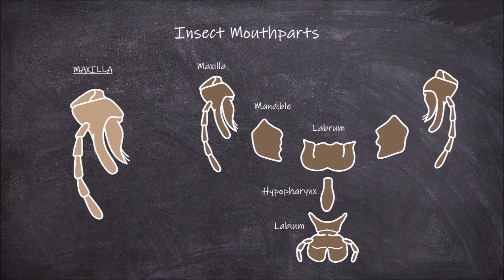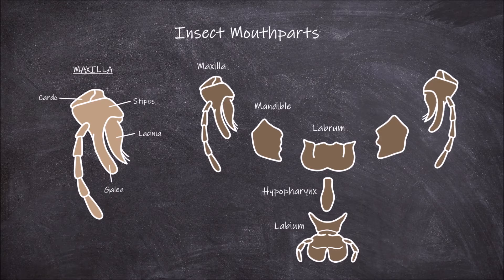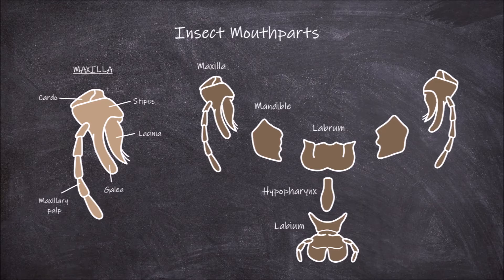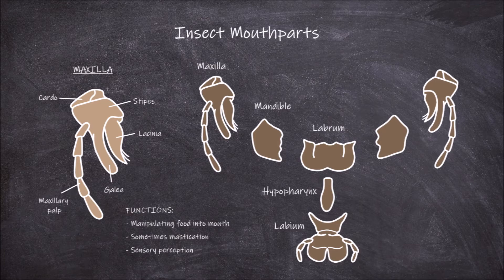The maxillae are also paired structures, with one found on each side of the head below the mandibles. Each maxilla is made up of several parts. The basal part is composed of two parts: the cardo and the stipes. Attached to the stipes are two lobe structures called the lacinia and the galea. Another structure known as the maxillary palp comes off laterally from the stipes and is segmented. The maxillae function in manipulating food into the mouth, and in some insects are involved in masticating food. The galea and maxillary palps also function in sensory perception using mechanoreceptors and chemoreceptors.